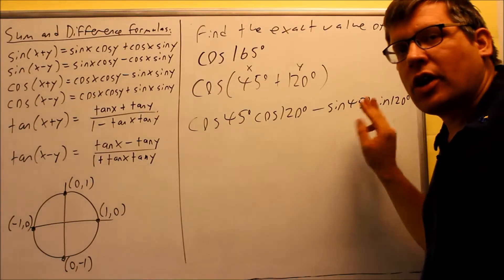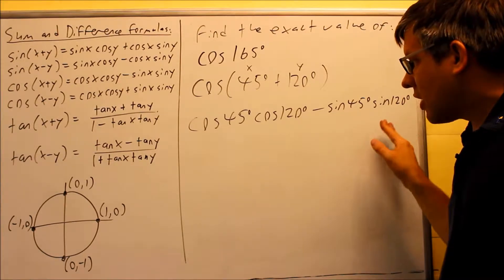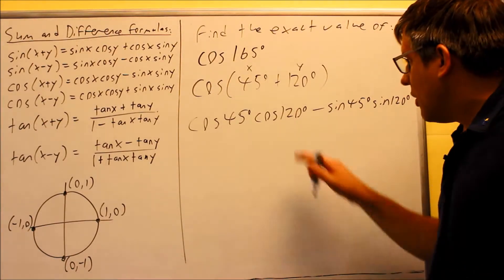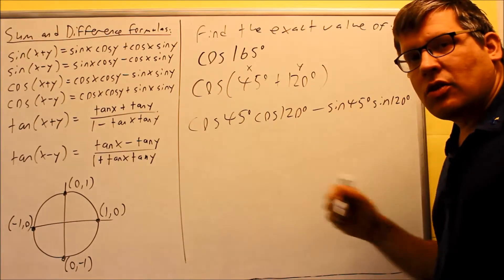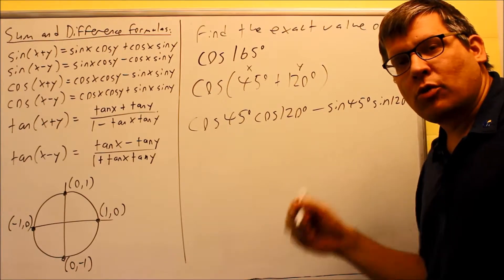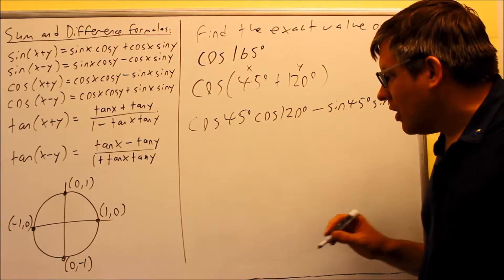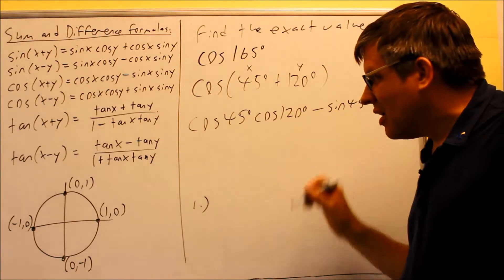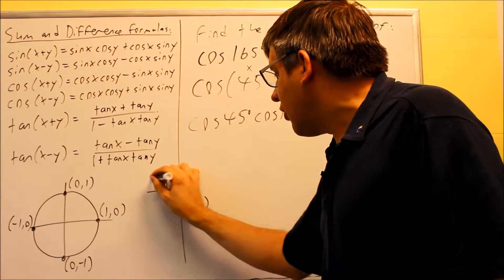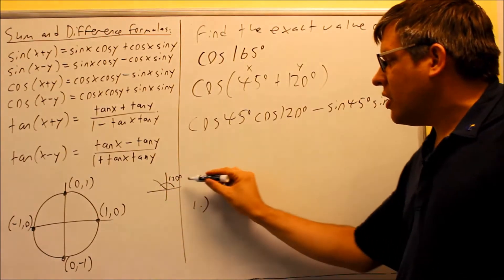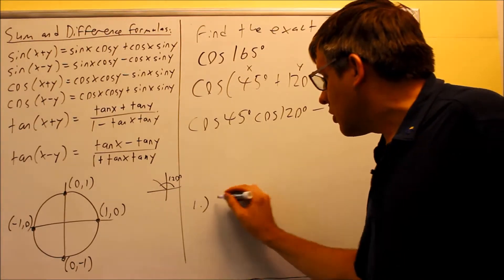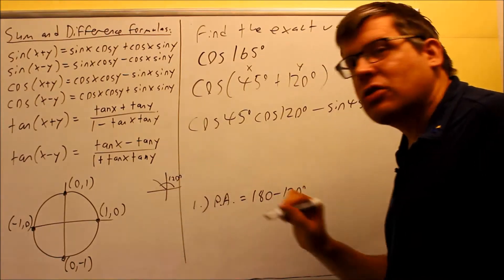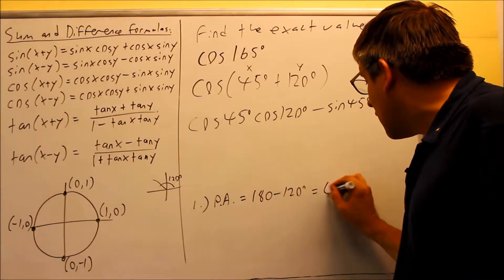Now cosine 45, sine 45, we can get those directly from the table. However, with these other ones, cosine 120 and sine 120, we need to use a reference angle in order to get those. So in order to accomplish that, there's a three-step process we talked about in a previous session when working with reference angles. The first step would be, you want to draw this in standard position and figure out what the reference angle is. If I draw this one out, 120 is going to be in the second quadrant. So my reference angle here is going to be 180 minus 120. That's the formula if you're in the second quadrant. This gives you 60 degrees.